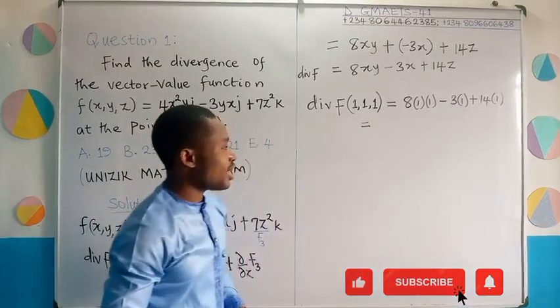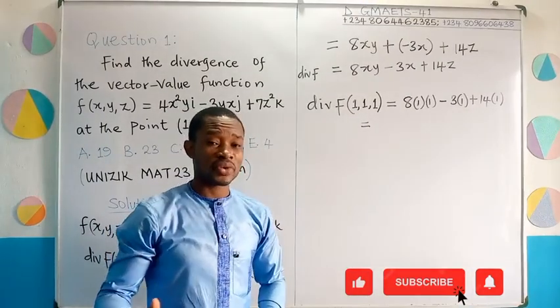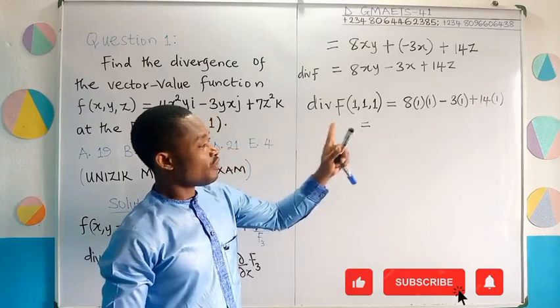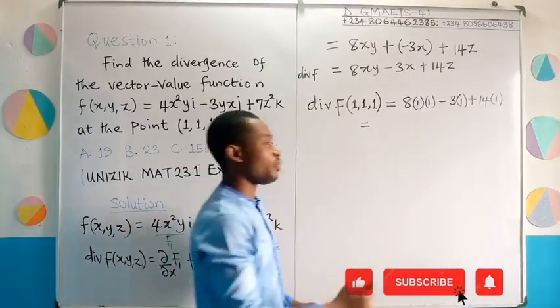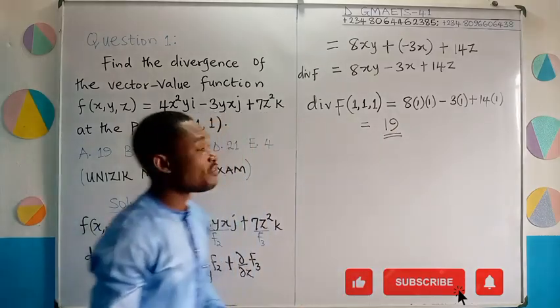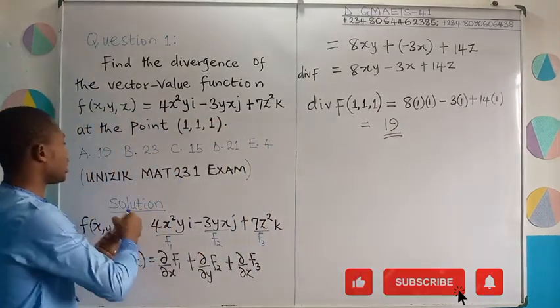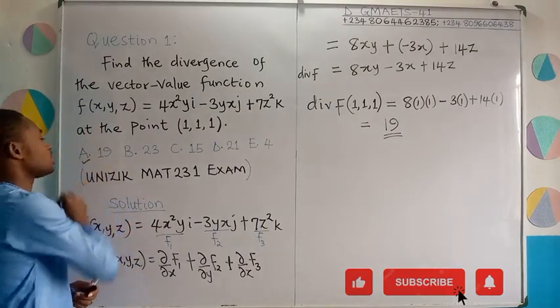And if we simplify this, 8 × 1 × 1 is 8 minus 3 × 1 is 3. 8 minus 3 is 5. 14 × 1 is 14 plus 5 gives us 19. Therefore, the divergence of this vector value function at this given point is equal to 19. The correct option is A.